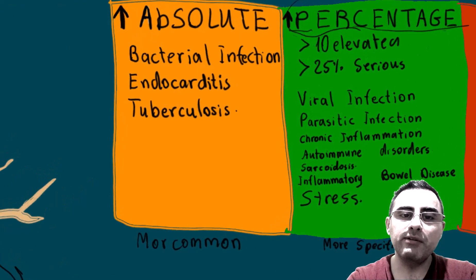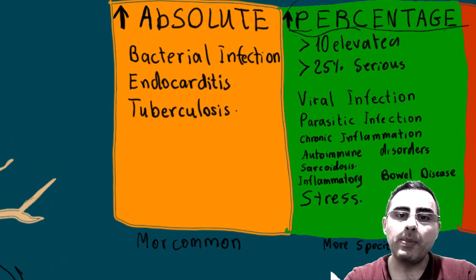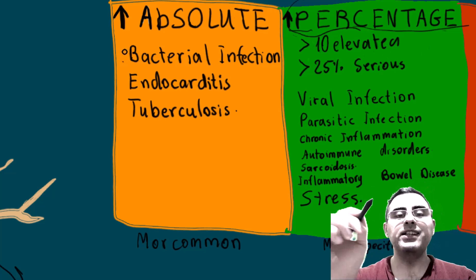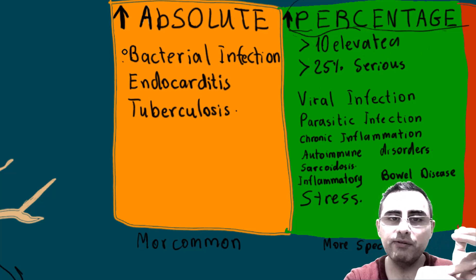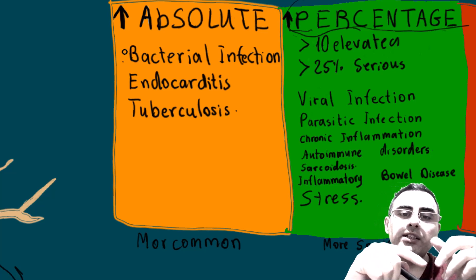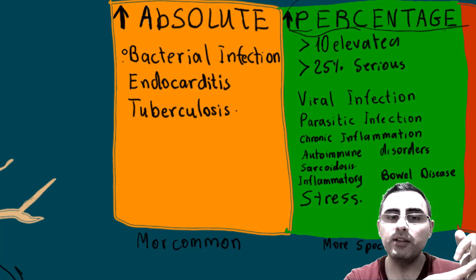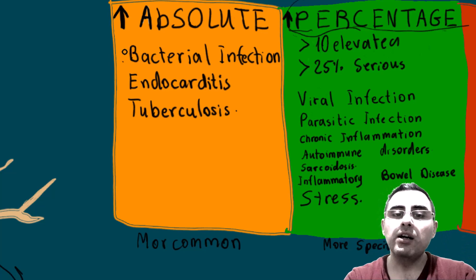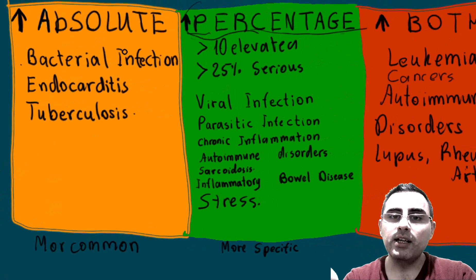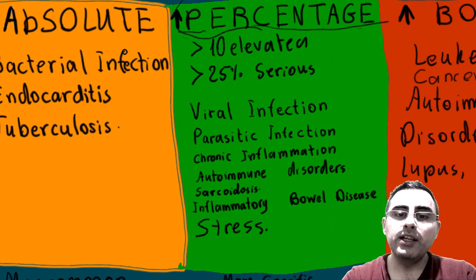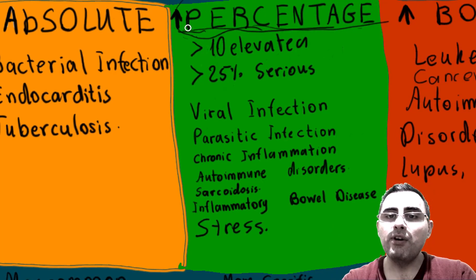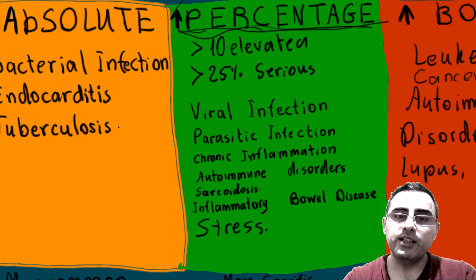When the absolute level of monocytes is elevated, the most common cause is bacterial infection. It can also be viral infection, but typically these are acute infections. Specific causes include endocarditis and tuberculosis. In the case of viral infections, it is more common for the percentage of monocytes to be elevated rather than the absolute count.